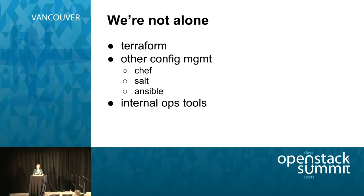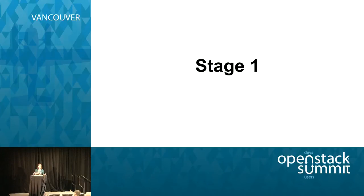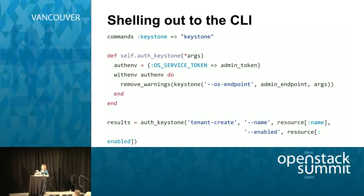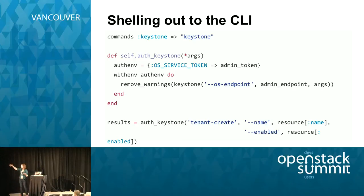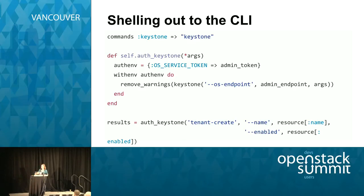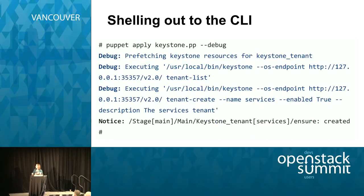We went through three stages when trying to solve this problem. The first stage is how these providers were originally implemented. Puppet provides a way to translate command line commands into Ruby functions, so we can turn the keystone command into a keystone function and pass in flags and arguments as if we were shelling out. We'd set environment variables for authentication, call the function, and that's how we'd get Keystone resources. In the debug output you can see this really is essentially just shelling out to the command line.